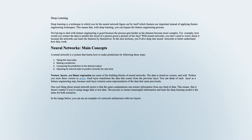Deep learning is a technique in which you let the neural network figure out by itself which features are important, instead of applying feature engineering techniques. This means that with deep learning you can bypass the feature engineering process. Not having to deal with feature engineering is good because the process gets harder as the datasets become more complex. For example, how would you extract the data to predict the mood of a person given a picture of her face? With neural networks, you don't need to worry about it because the networks can learn the features by themselves. In the next sections, you'll dive deep into neural networks to better understand how they work.